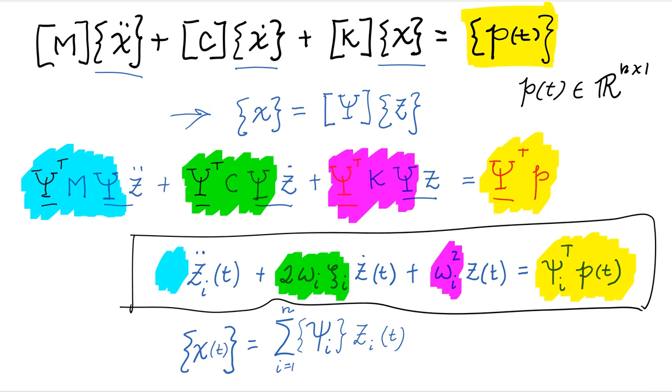Once we solve that equation for every mode, we recombine them again by scaling them by each specific mode shape. And their sum gives us the total dynamic response of the structure. And basically that's all there is in terms of analyzing structures subject to dynamic loading using modal analysis.